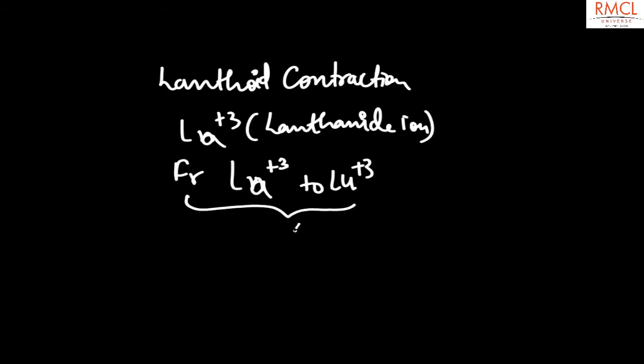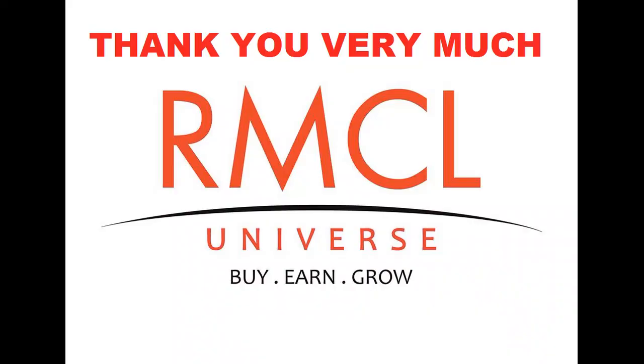The lowest value is 0.85 angstrom, which is the ionic radius of lutetium plus 3. So the correct option is option D. Thank you.